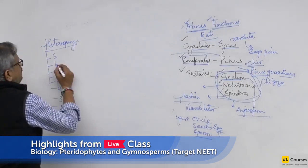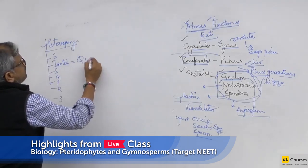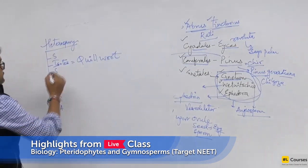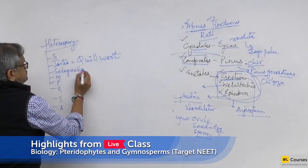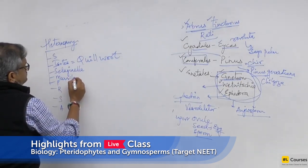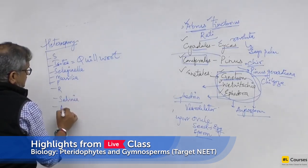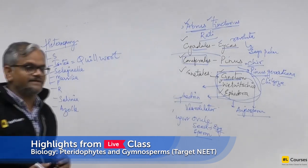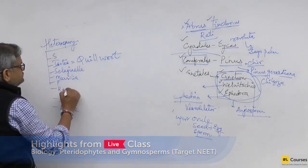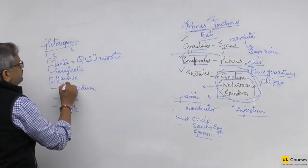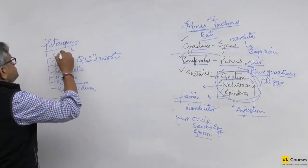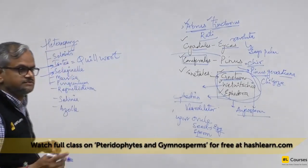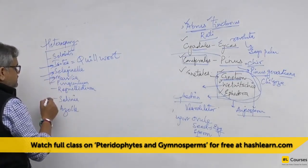From the mnemonic, 'I' is Isoetes, commonly called quill wort — this match-the-following question has been asked many times. The important ones among the eight are: Selaginella, Marsilia, Salvinia, and Azolla. The remaining three are Regnellidium, Pilularia, and Stylites, but those five are the most important ones to remember.